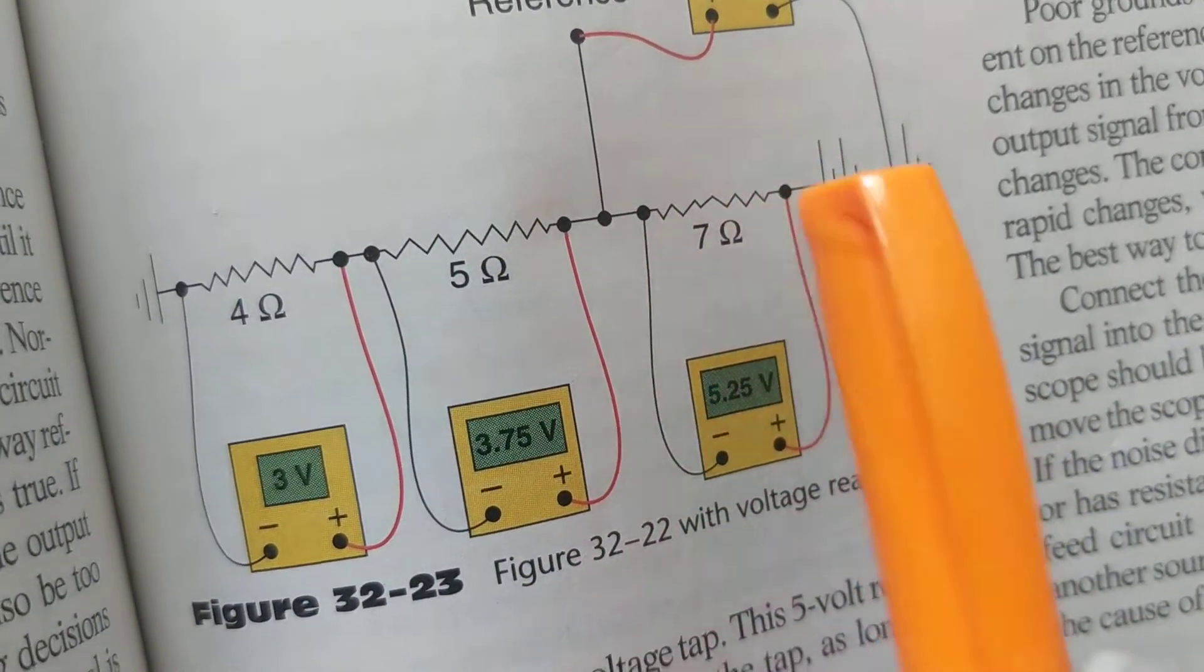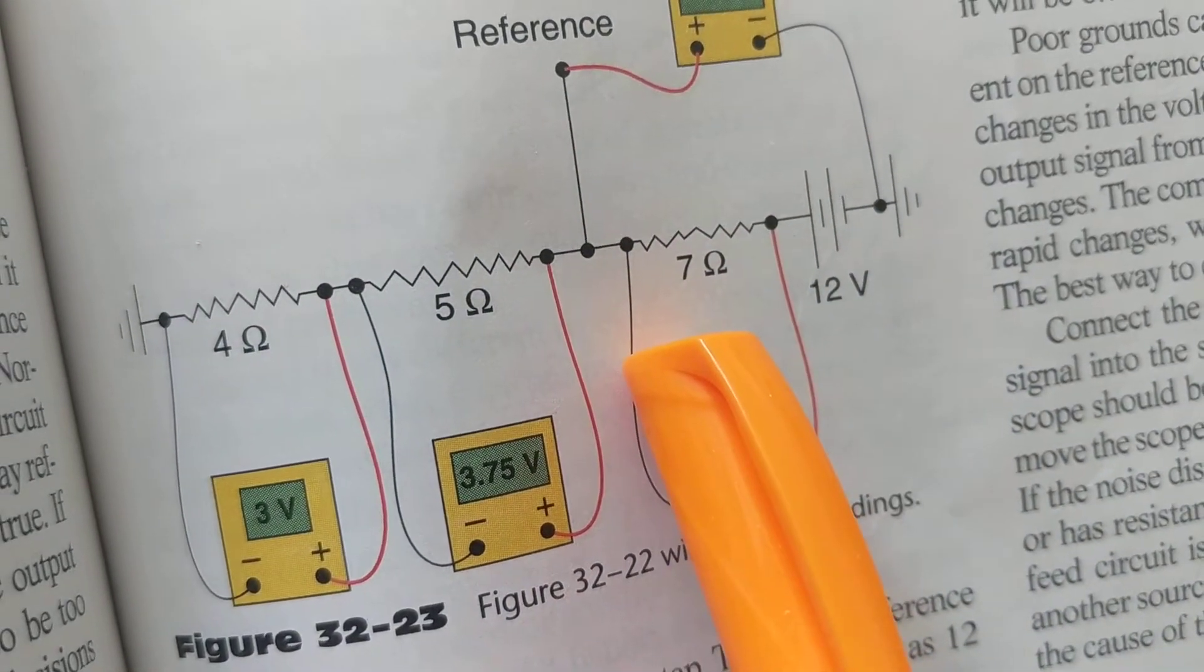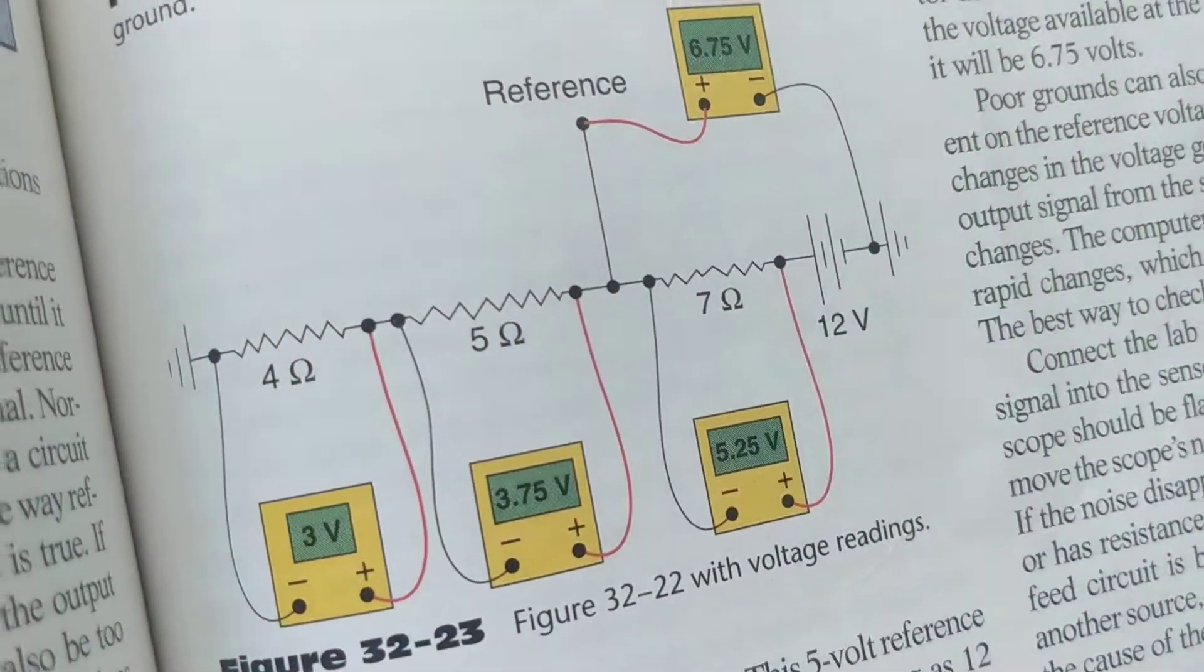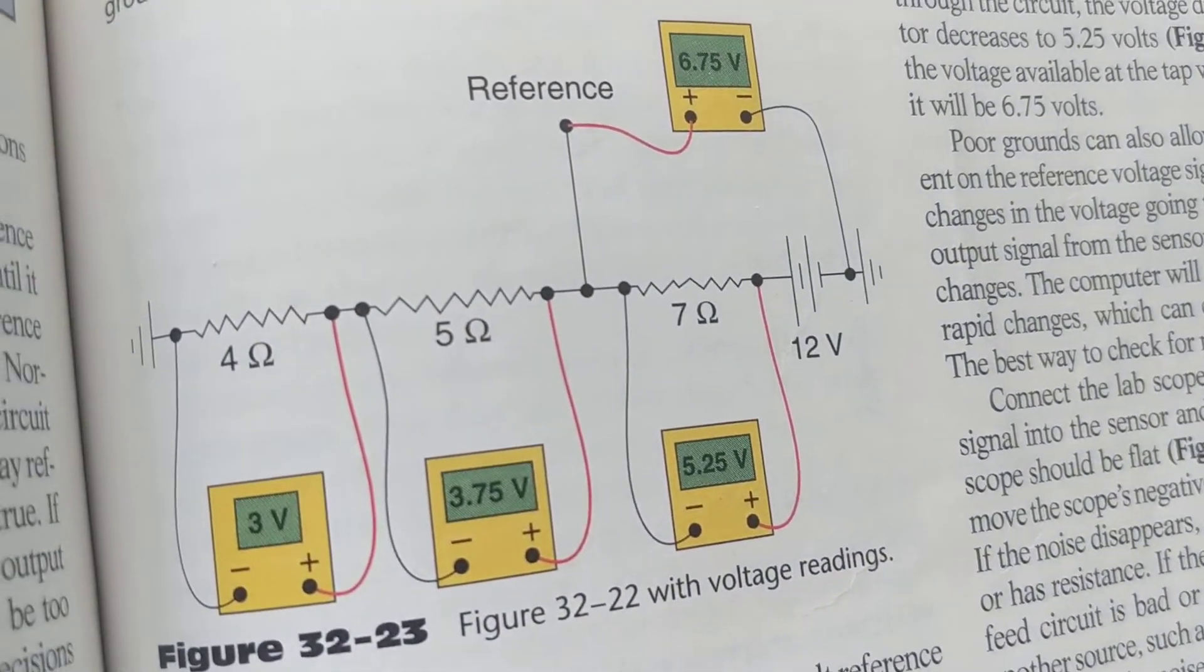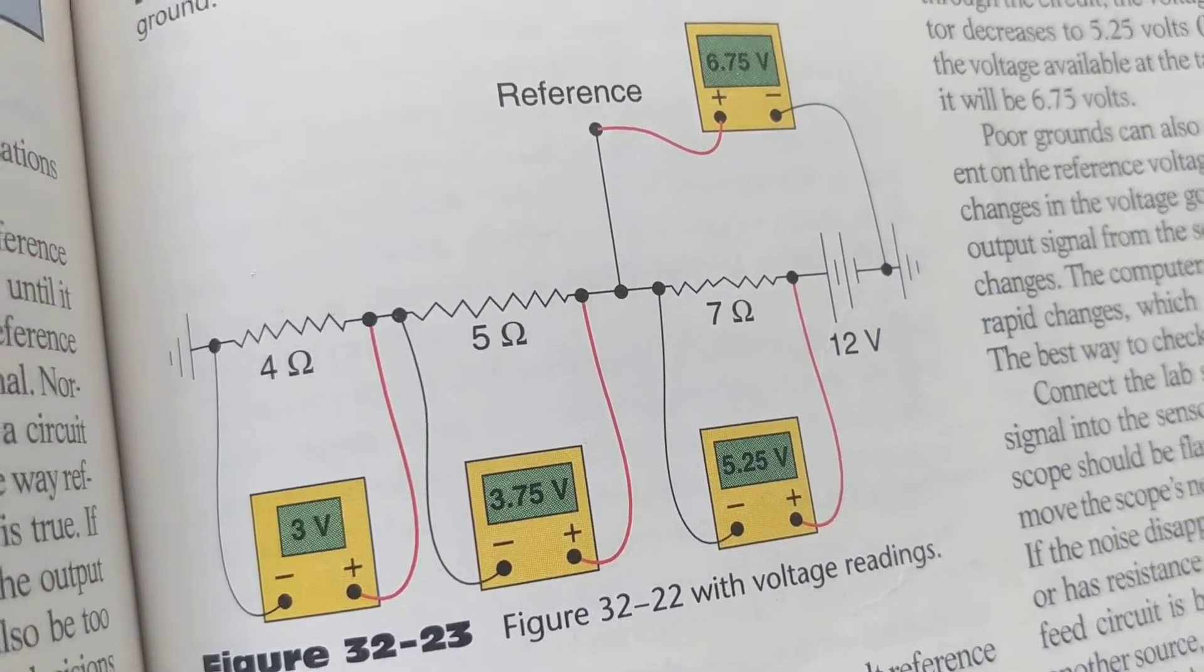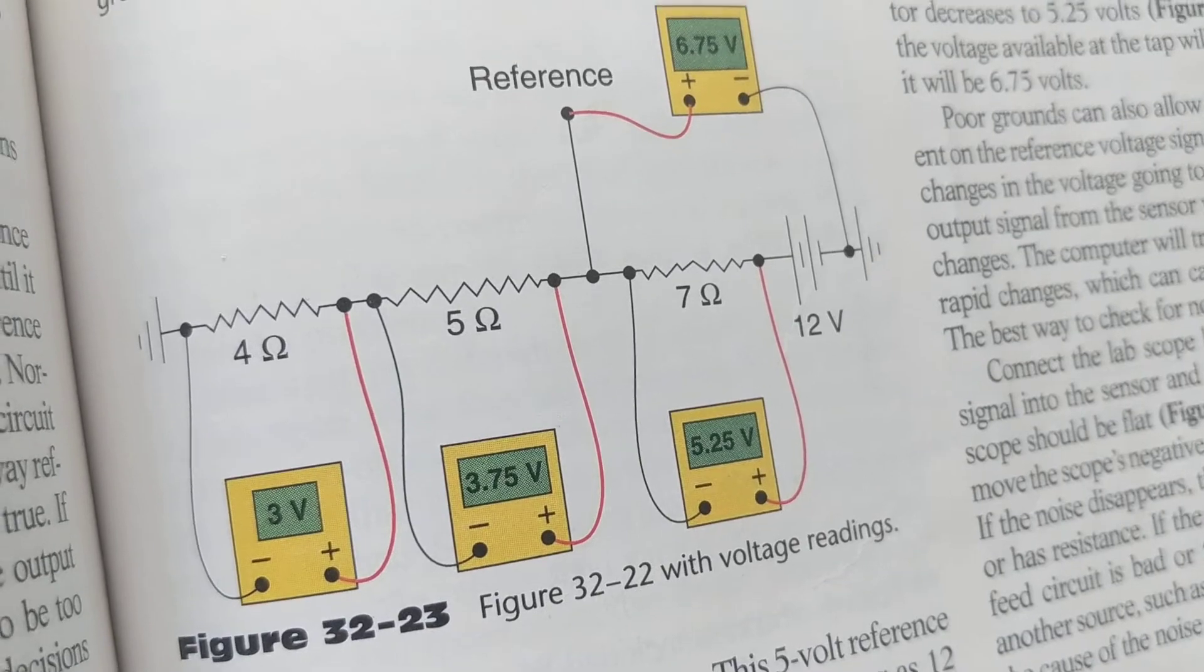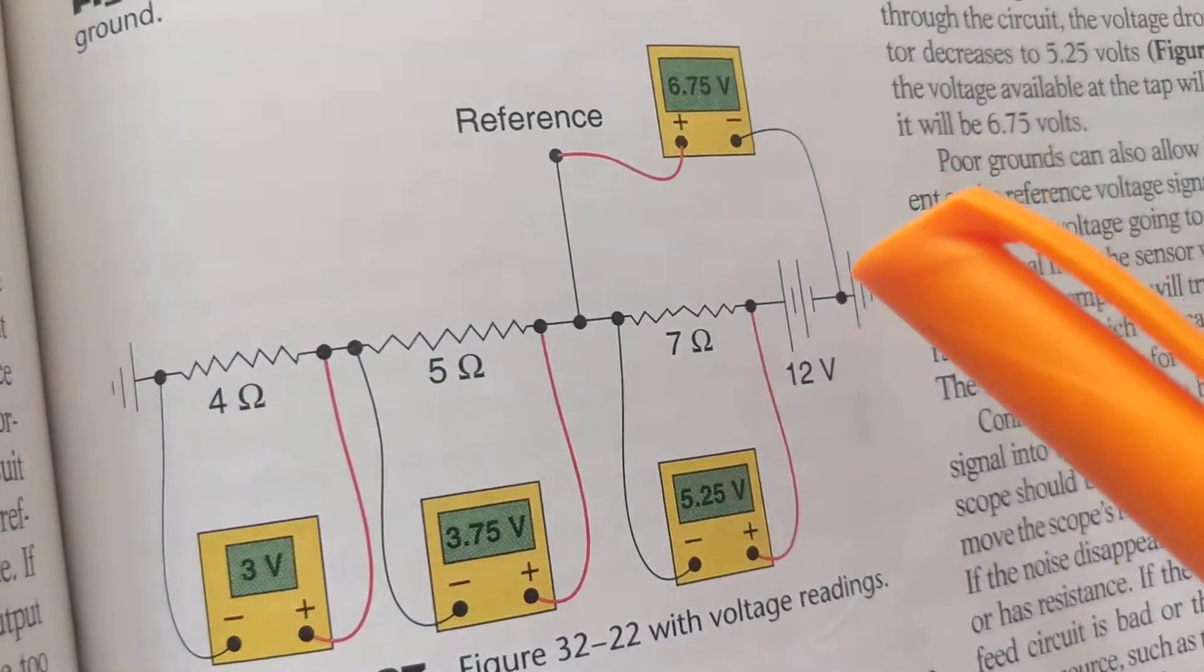As you can see, as the previous example, we're going across each one. Let's take the negative of the meter and put it to ground, and that's what you're always doing when you measure automotive circuits, except for the one that I showed you with the sensors that go to the PCM. Those you measure across them, not with reference to ground.